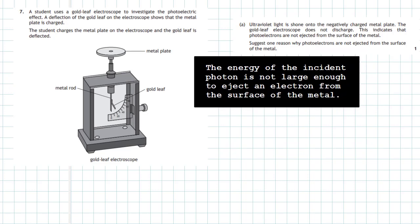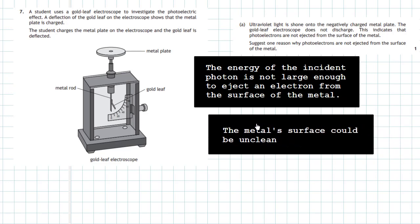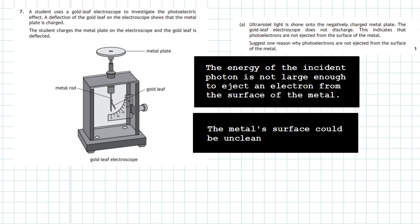Well, for a start, the energy of the incident photon is not large enough to eject an electron from the surface of the metal. Then no electrons will be ejected and the electroscope will hold its charge. Another possibility which is often forgotten about is that the metal surface is actually unclean. There may be an oxide coating on it and that would inhibit the electrons being ejected from the metal surface.